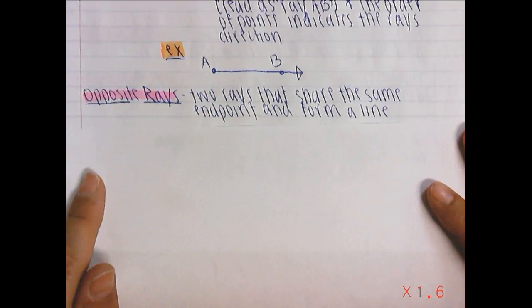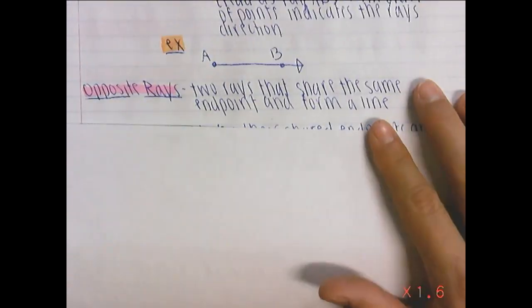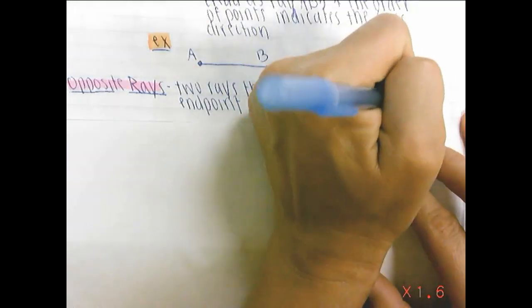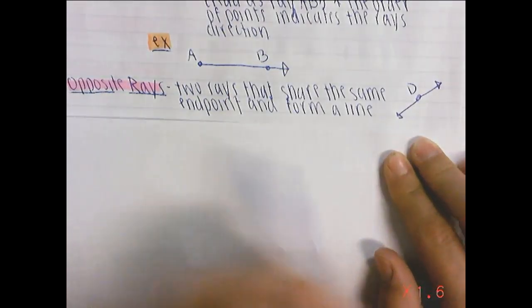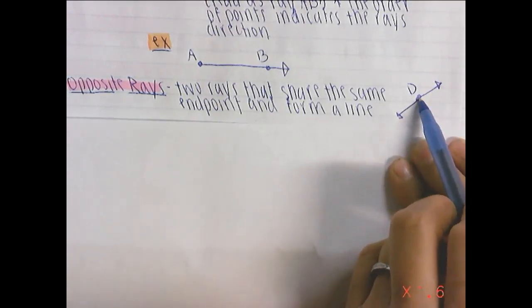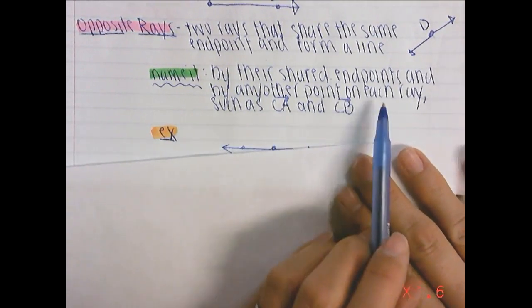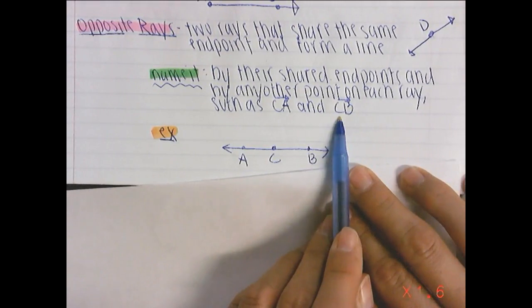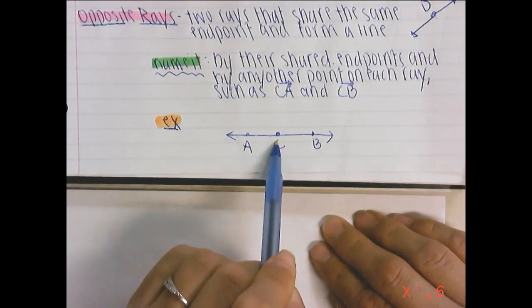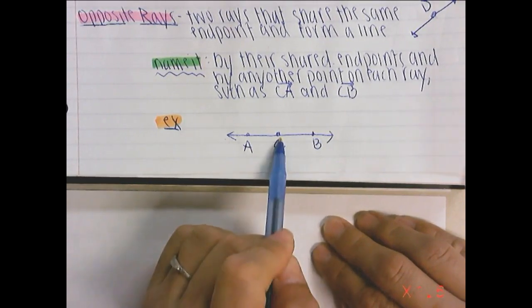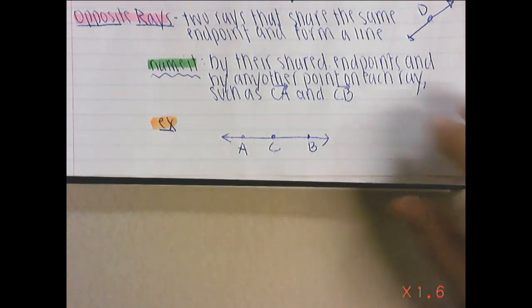Okay, then we have opposite rays. Two rays that share the same endpoints and form a line. So let me draw you an example of that really quick. So let's say we have a D here in the middle. It goes this way and that way. That would be opposite rays. They form a straight line, that they start at one original place. You name it by their shared endpoints and by another point on each ray, such as CA and CB. So here's an example. Right here, C is the point they have in common. You would say ray CA or ray CB. You start where the point is in common and go either one way or the other way. And that is an opposite ray. It's very important to remember that they create a straight line.